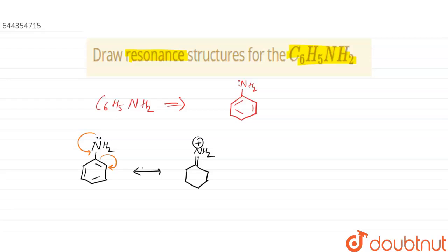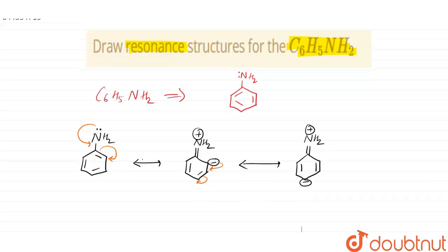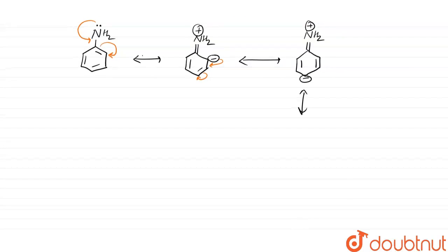Since nitrogen now has four bonds, it acquires a positive charge. The electrons then shift further around the ring, so a negative charge appears on the ring carbon opposite to NH2, while NH2 retains the positive charge.